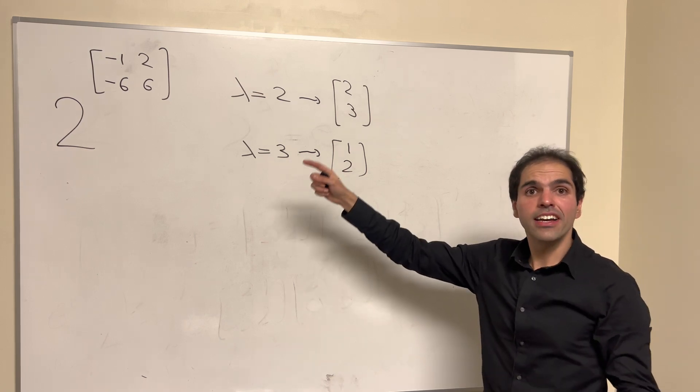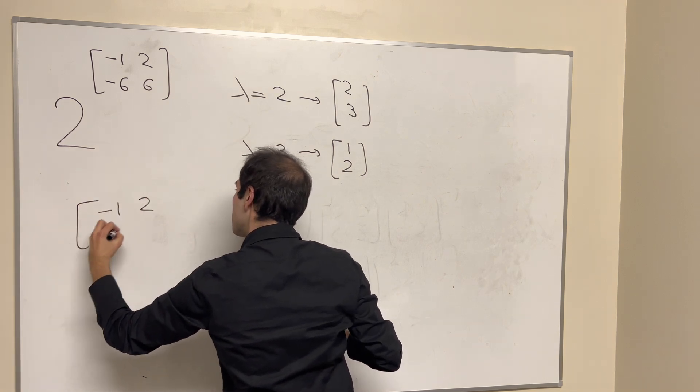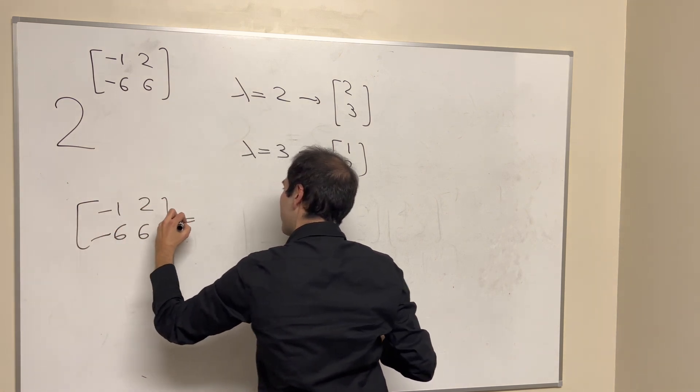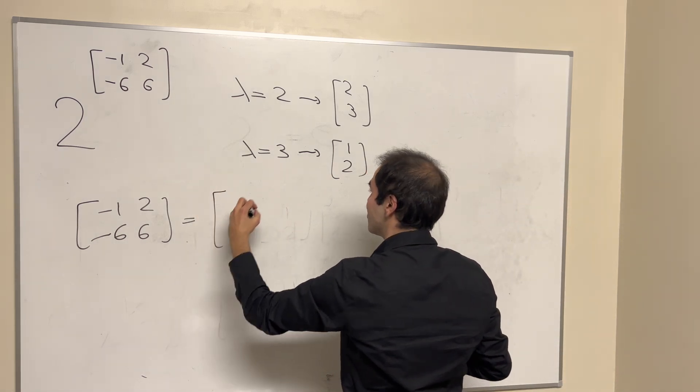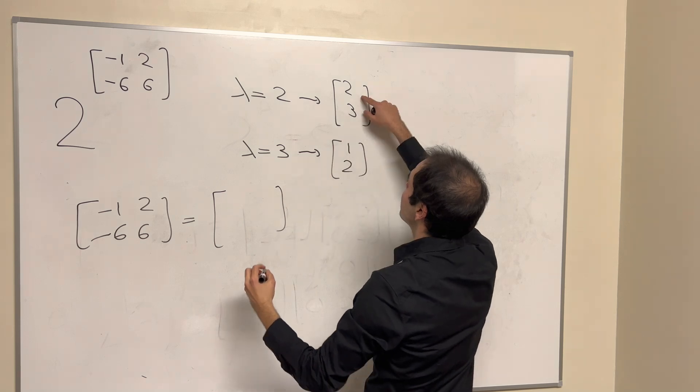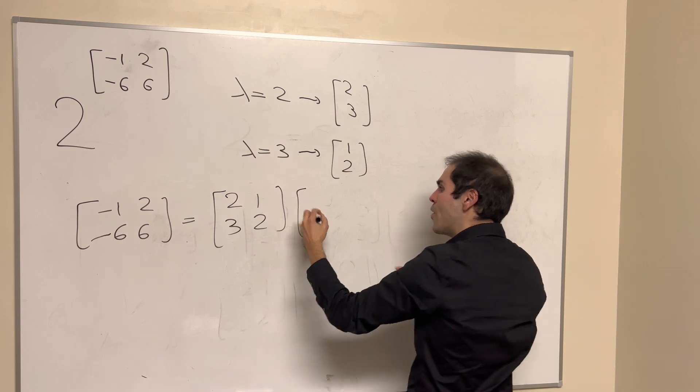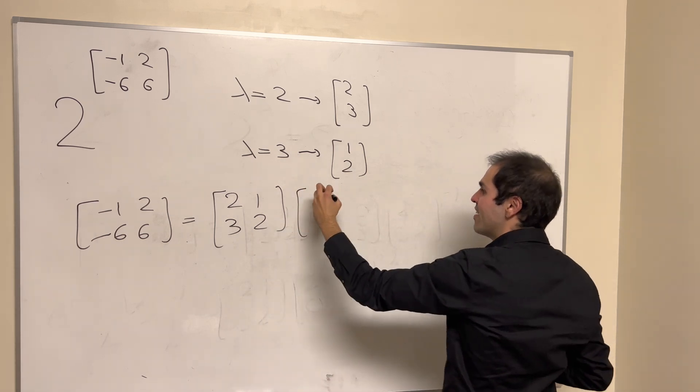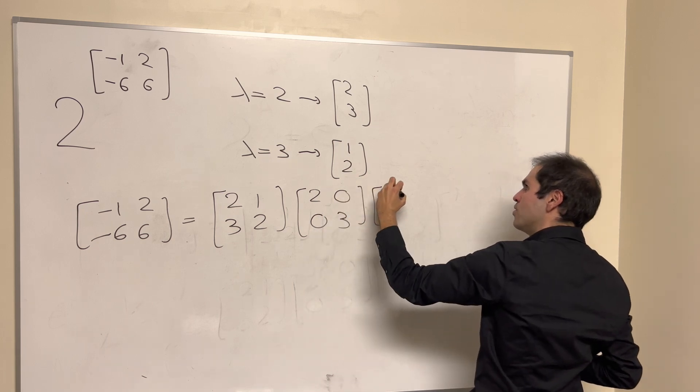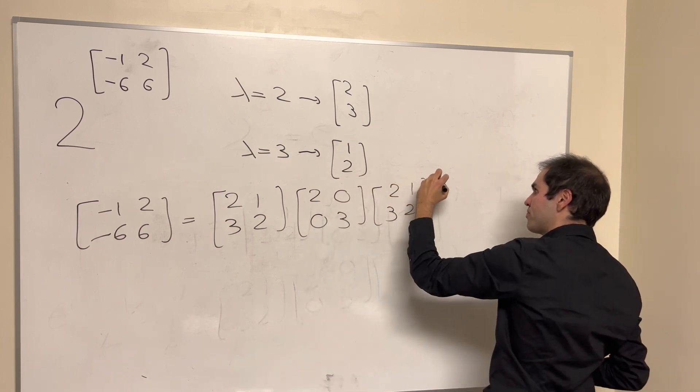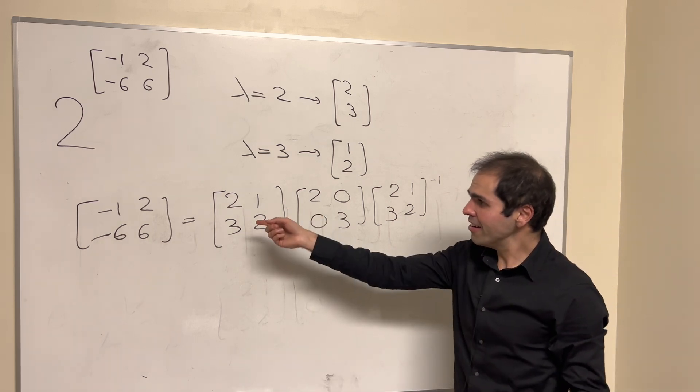It tells you that this matrix, minus 1, 2, minus 6, 6, can be put in diagonal form, so it can be turned into a diagonal matrix as follows. If this is a matrix of eigenvectors, then you can turn into the matrix of eigenvalues, 2, 0, 0, 3, and then 2, 1, 3, 2, inverse. That's covered in a different video.